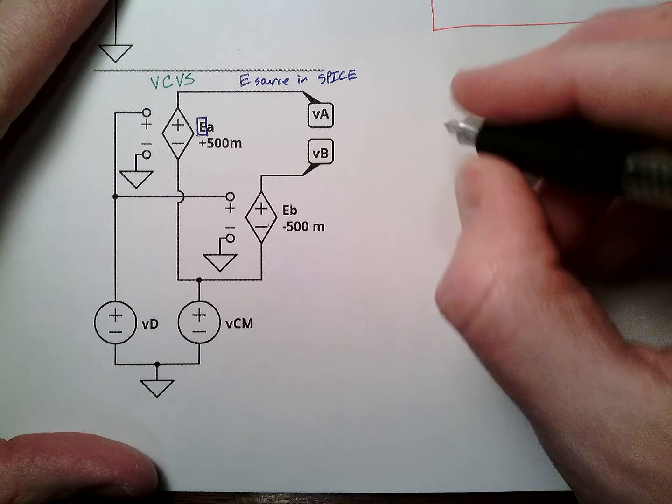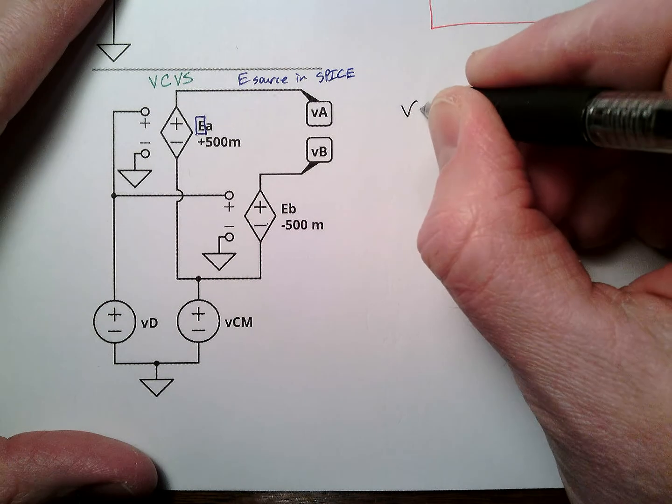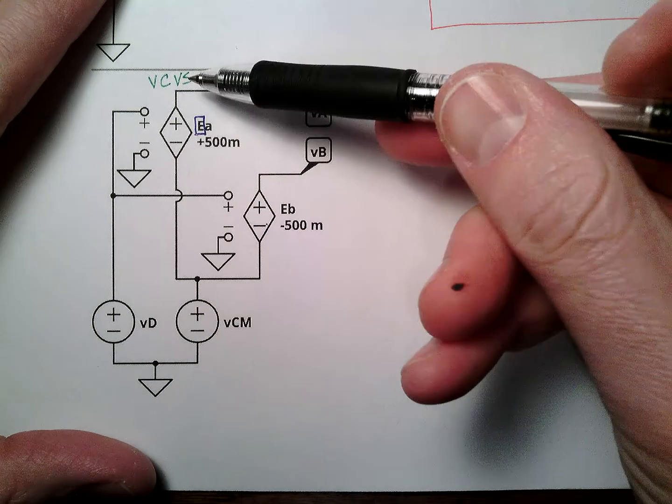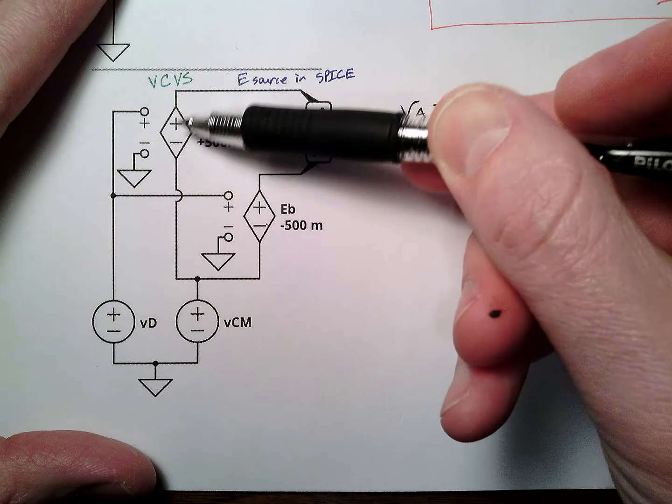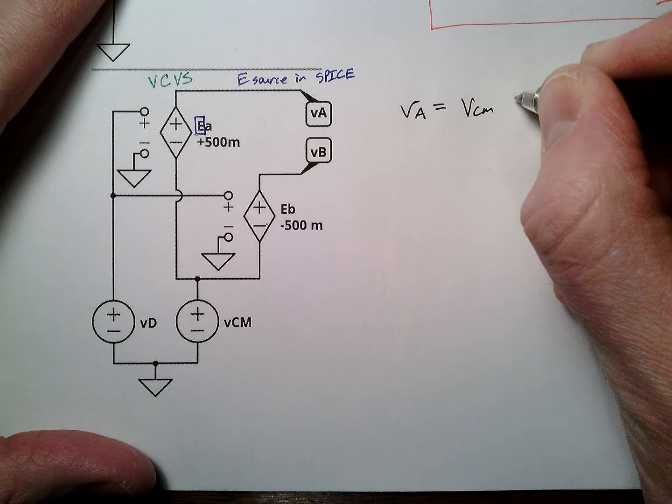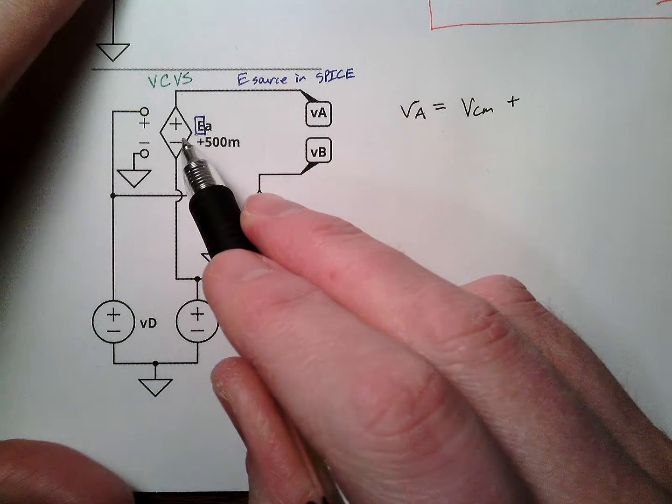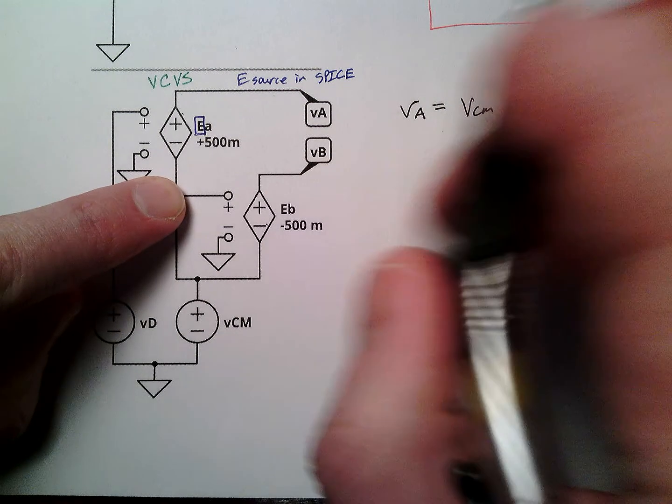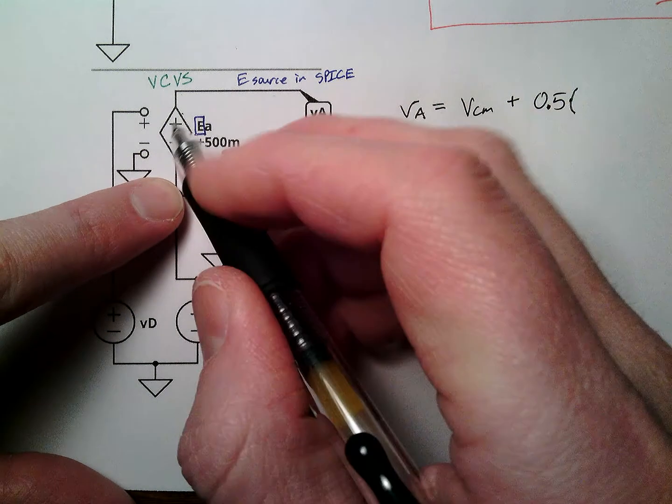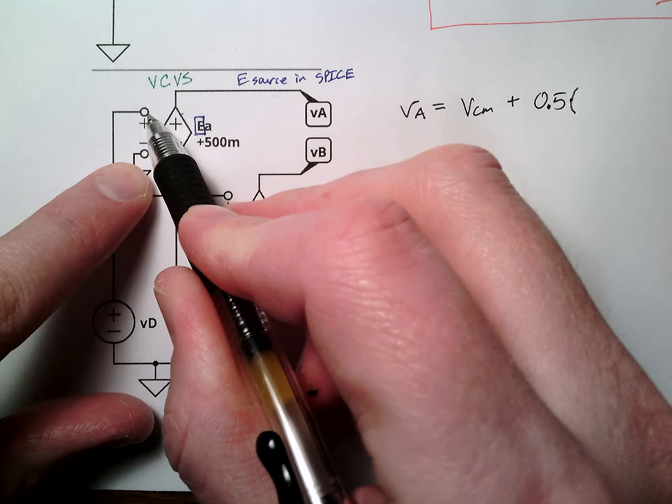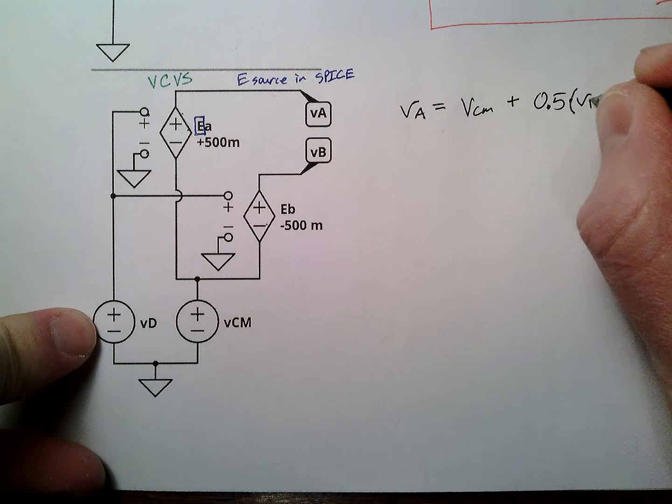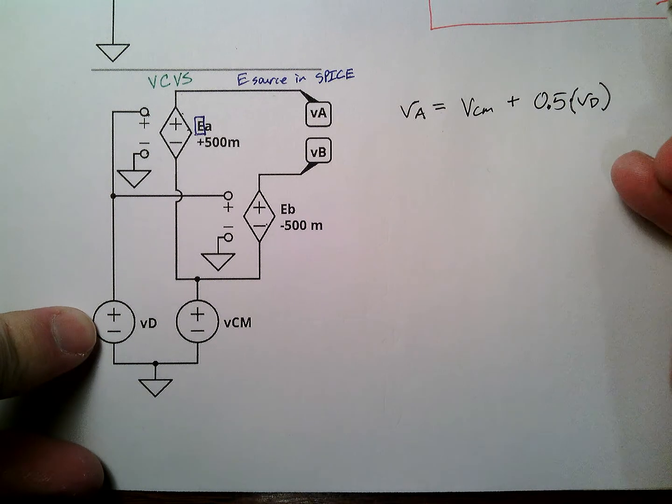So VA, let's just work out what VA is. This VA is, well, it's the top side of this. You see how the minus side of this is VCM? It's going to be VCM plus the value of what this voltage source is here. Well, this voltage source is 0.5 times the value of this input. This is the gain of that. So this input is 0 here attached to VD, and that's it.